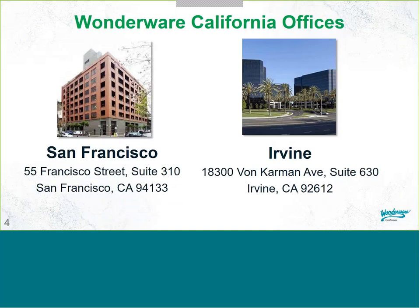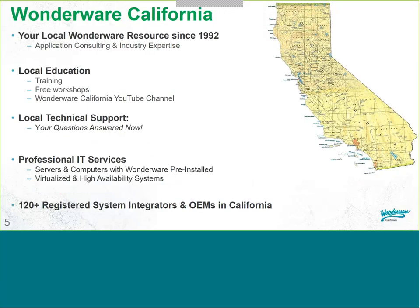At Wonderware California, we have two local offices — one in San Francisco and one in Irvine. Stop by and visit us when you get the chance. We also hold training and free hands-on getting started workshops at these locations. Wonderware California has been providing local application consulting and industry expertise based on over 25 years of industrial automation experience. We provide professional IT services to help you get started on your project, including building servers and computers with Wonderware preinstalled, as well as virtualized and high availability systems. If you are looking for help on turnkey projects or programming, we have over 120 system integrator partners to help you address that need.